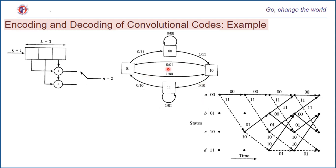We will not be repeating how we obtained these two — you can refer to the earlier video where we derived the state diagram and trellis diagram for the given convolutional encoder structure. However, we will utilize this trellis diagram for the encoding process.